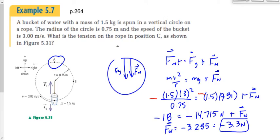The negative value makes sense because we knew the normal force was pointing downward before we started. In this roller coaster scenario, the actual weight is about 14 newtons, but the apparent weight at the top is only 3.3 newtons — so you'd feel lighter than you really are at the top of the circle, though you'd still feel like up is down.